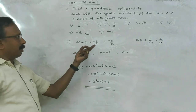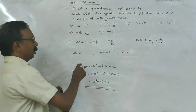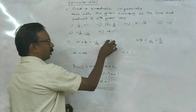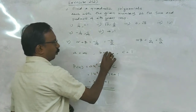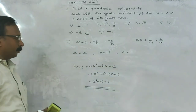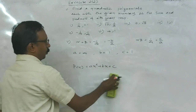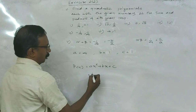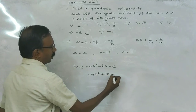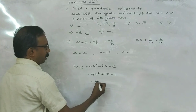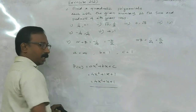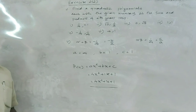Here it is very easy. A is equal to 4, minus B is minus 1 so B is 1, C is also 1, isn't it? Now: 4X squared plus 1 times X plus 1, that is 4X squared plus X plus 1 is the required polynomial, isn't it?